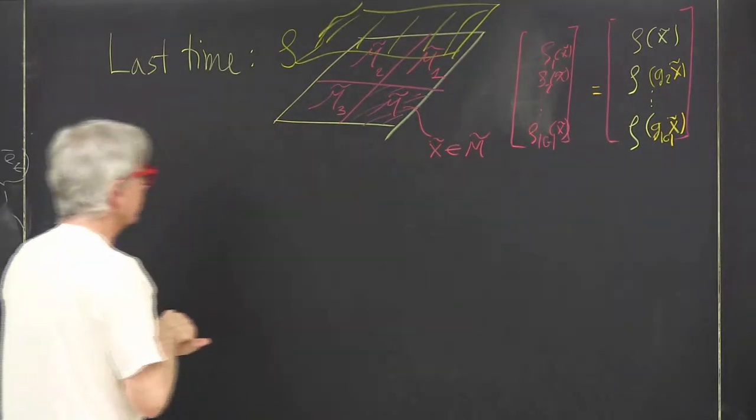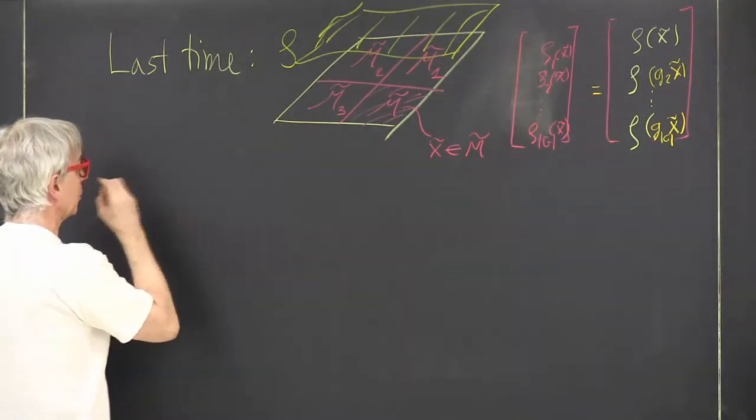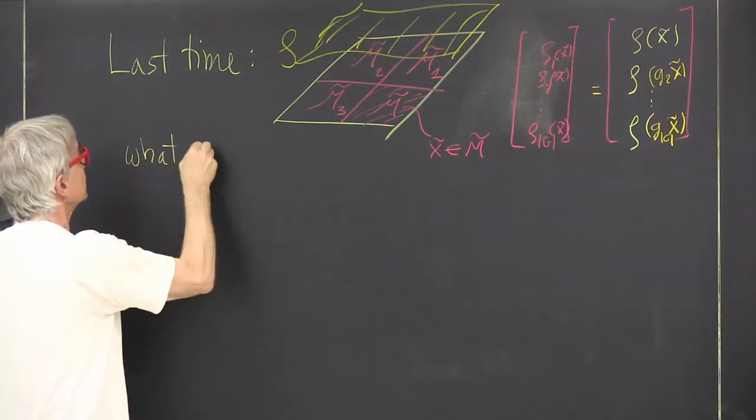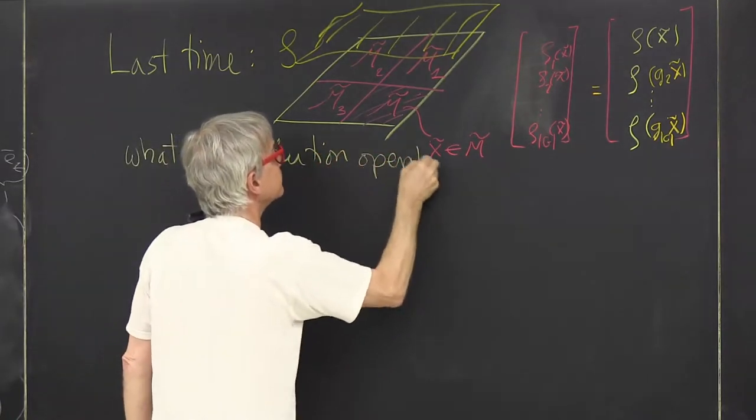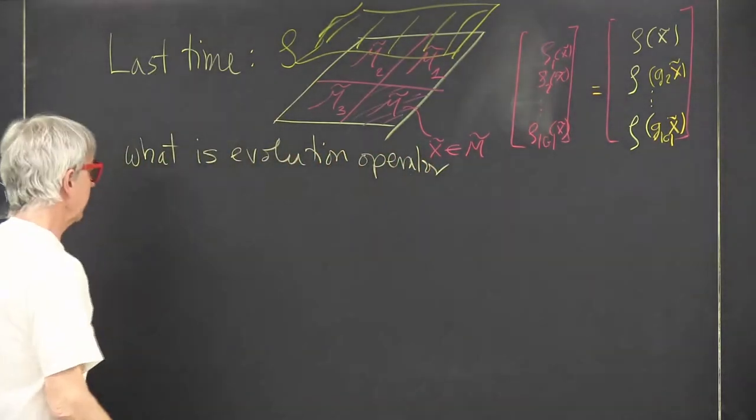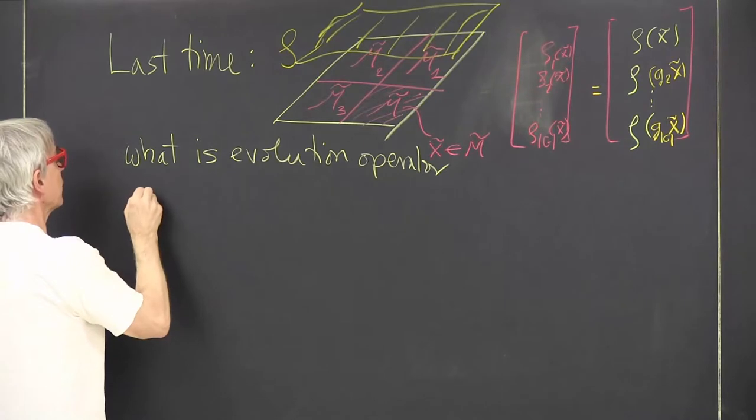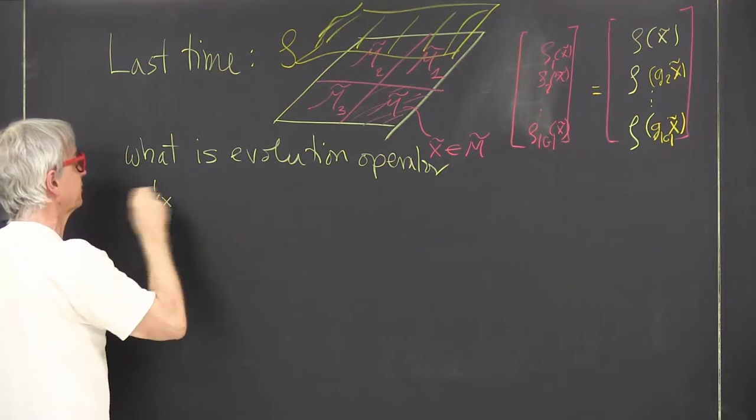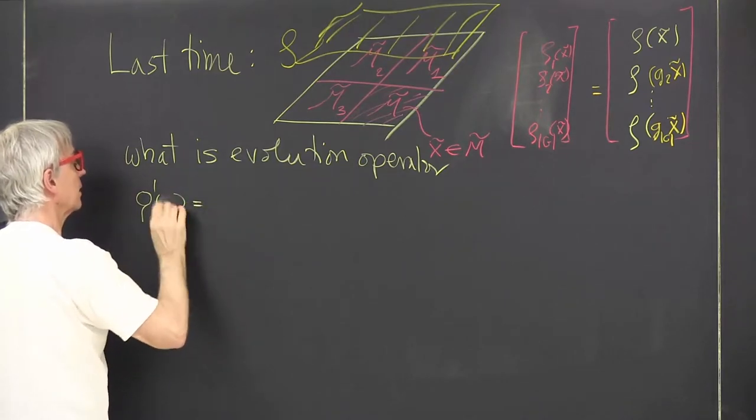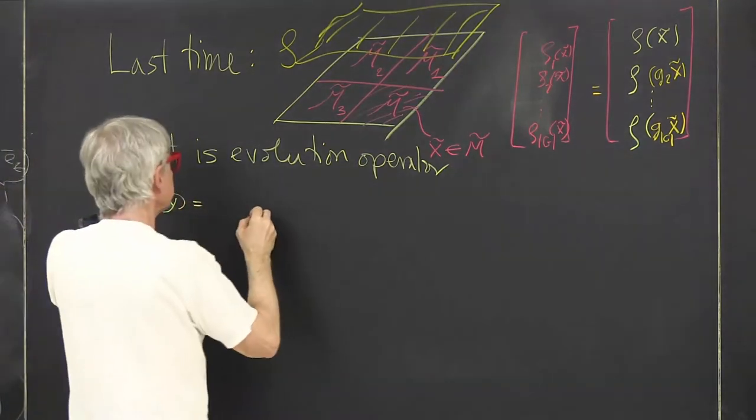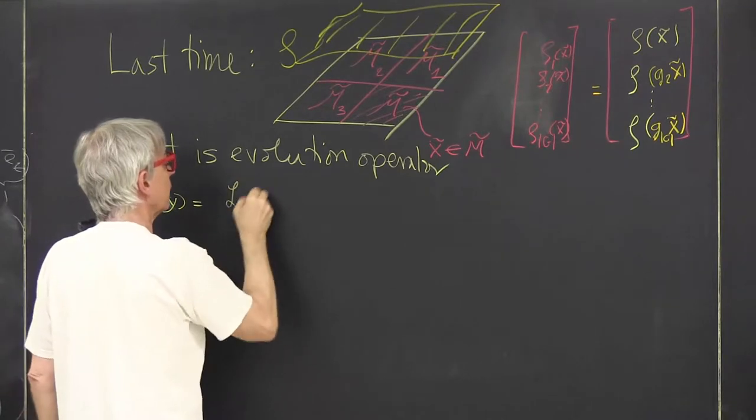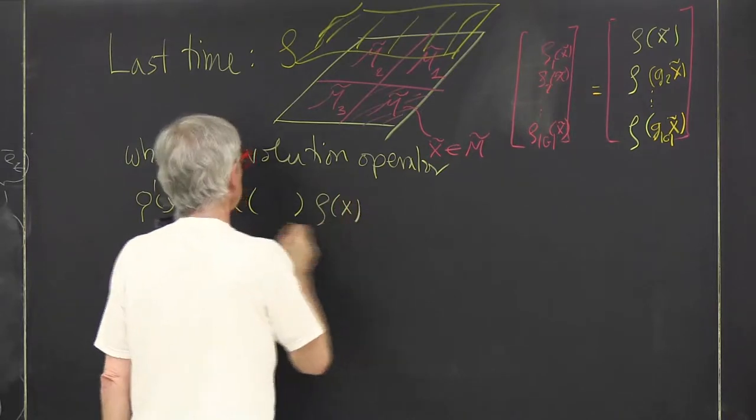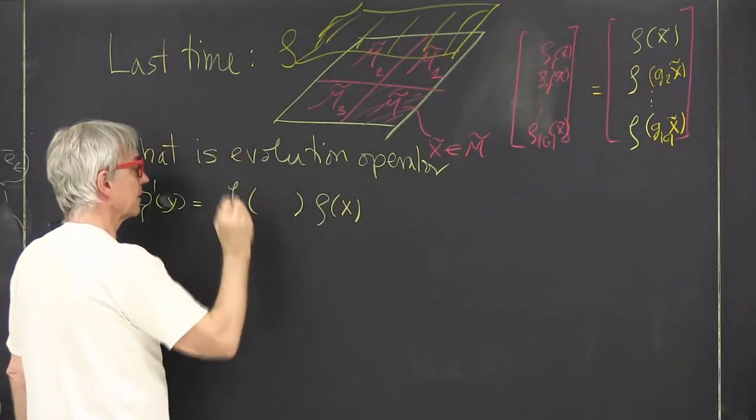The next question is: what is the evolution operator in this representation? If we originally had that function rho prime evaluated at point y in a state space, the next function was given by the original function evolution at time equals one.